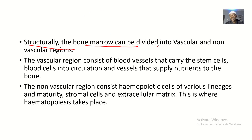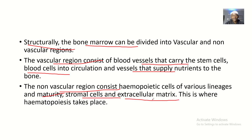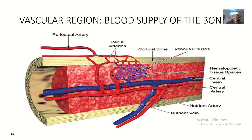The bone marrow can be divided into vascular and non-vascular regions. The vascular region consists of blood vessels that carry stem cells and blood into circulation, and vessels that supply nutrients to the bone. The non-vascular region contains hematopoietic cells of various lineages and maturity. They also contain stroma cells and extracellular matrix — stroma cells like fibronectin, fibroblasts, and endothelial cells. This is where hematopoiesis actually takes place. The stroma cells secrete growth factors and adhesion molecules that help hematopoiesis proceed in succession.